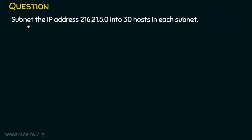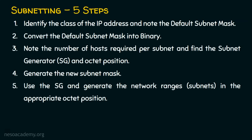The IP address is 216.21.5.0, and the number of hosts or IP addresses required per subnet is 30. Let's revisit all five steps.